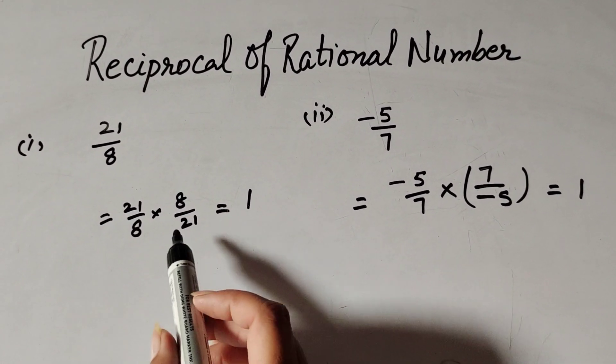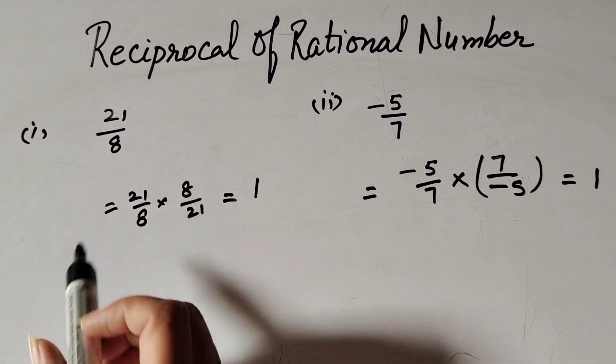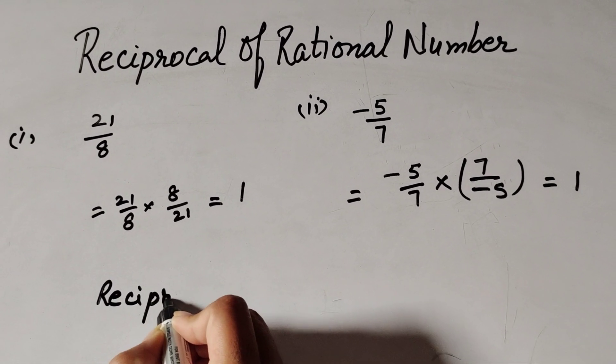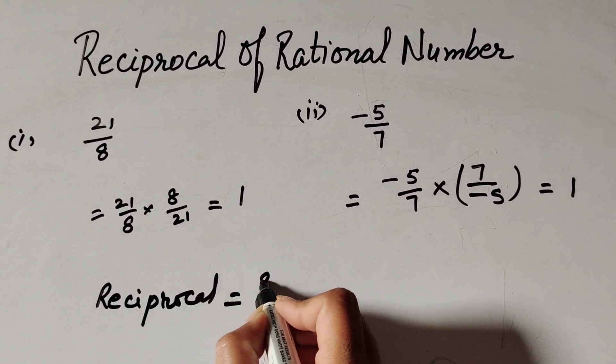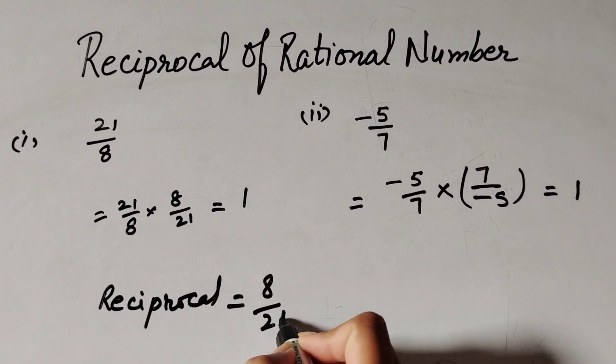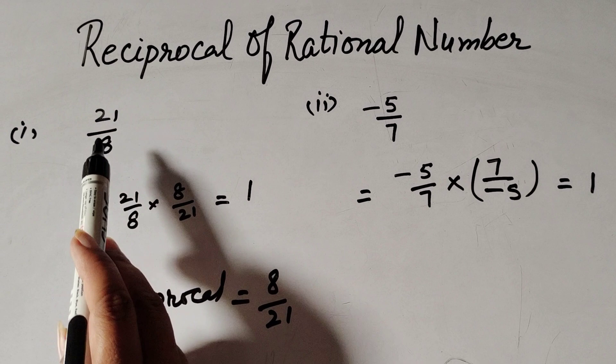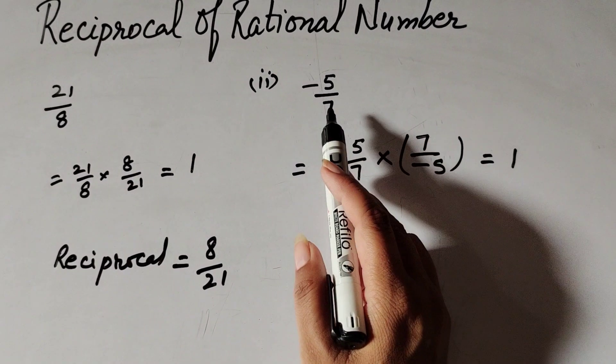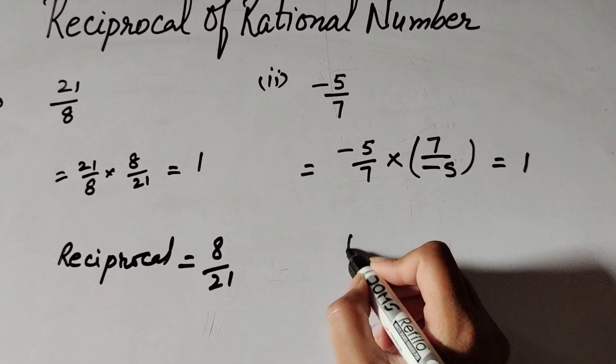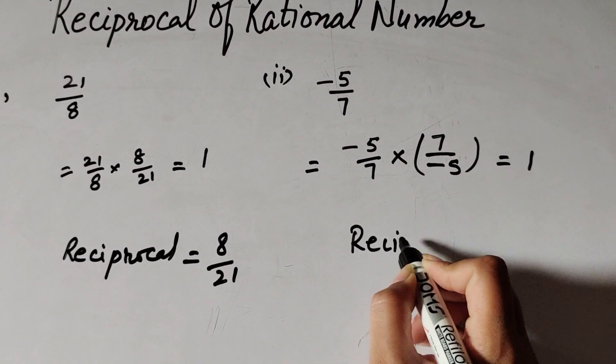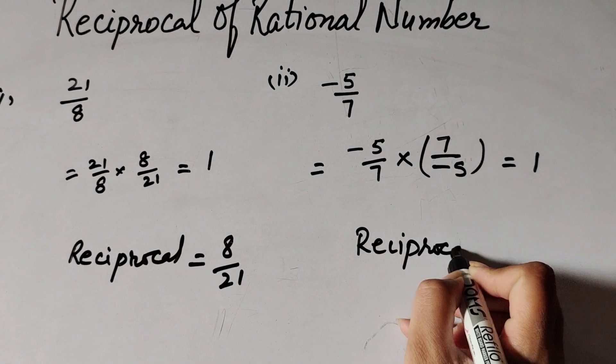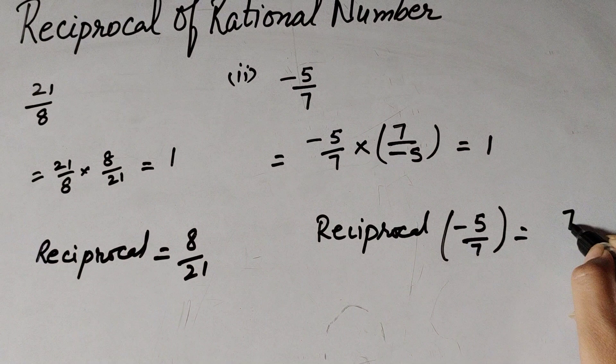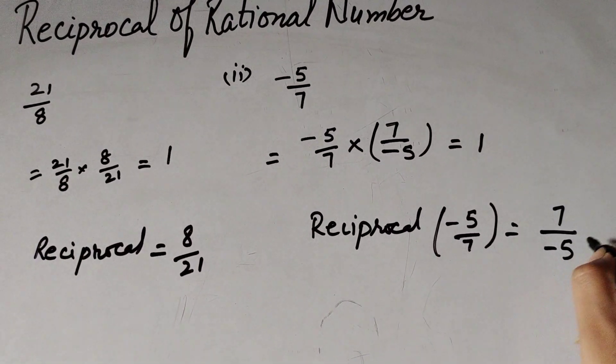In this number 8 over 21 multiplied by 21 over 8, so reciprocal of 21 over 8 is 8 over 21. So 8 over 21 is reciprocal of 21 over 8. And this reciprocal is also known as multiplicative inverse of given number. In second number minus 5 over 7, we find its reciprocal of minus 5 over 7 equal to 7 over minus 5.